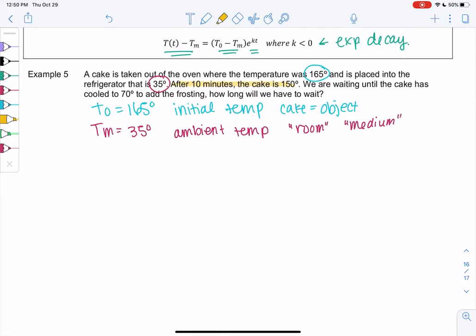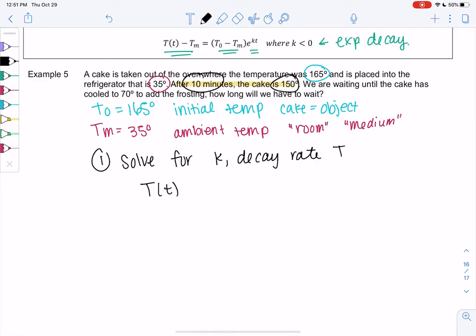So just like exponential models, we need to solve for the decay rate. So we're going to use the 10 minutes and 150 to solve for that. So our model is current temperature is unknown, T of T. Where big T is temperature, little t is time. Minus the room, minus the room, which is the refrigerator, 35 degrees. So the current difference is equal to the initial difference, 165 minus 35, times E to the KT. So T of T minus 35 equals 130, times E to the KT. That's my exponential model.